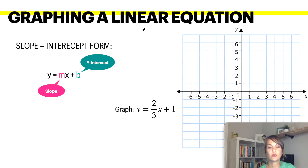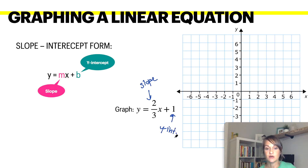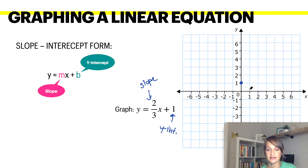Graphing a linear equation — the best way to do this is using slope-intercept form: y equals mx plus b, where m is your slope and b is your y-intercept. So to graph this, this is our slope and this is our y-intercept. Always graph your y-intercept coordinate point first. The 1 represents where it crosses the y-axis, so put a coordinate point there.